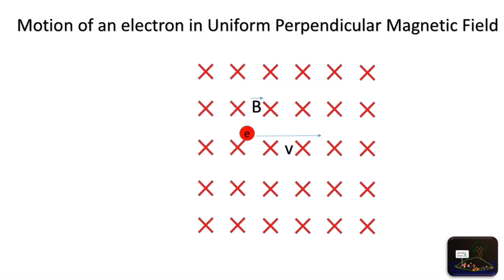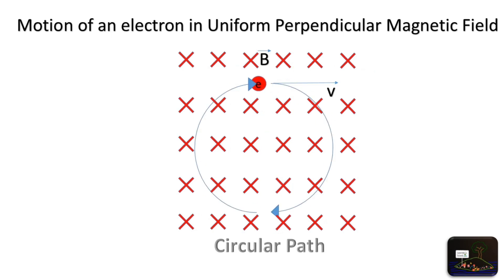Next case is perpendicular magnetic field. Here by Fleming's left-hand rule, the particle will move in a circular path, where electron will have clockwise and anticlockwise for proton. Complete explanation on Fleming's rule will be separately put.